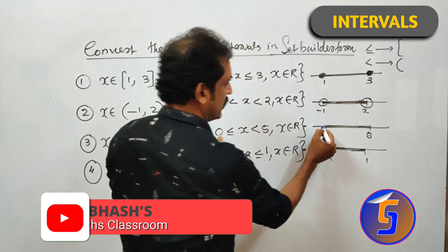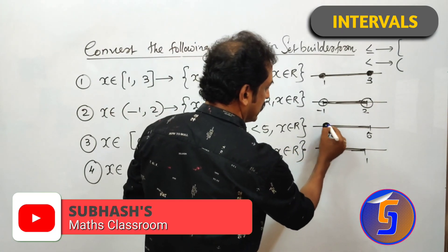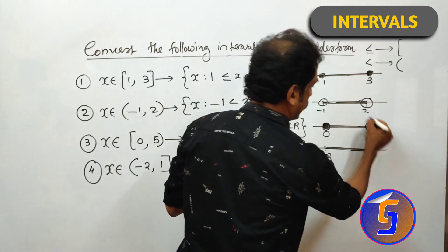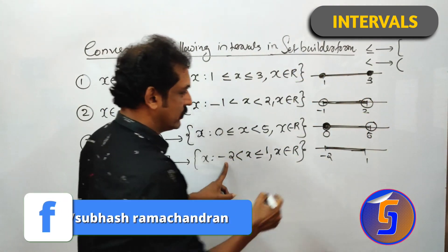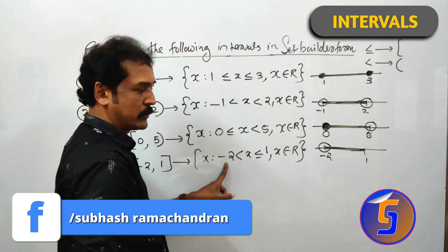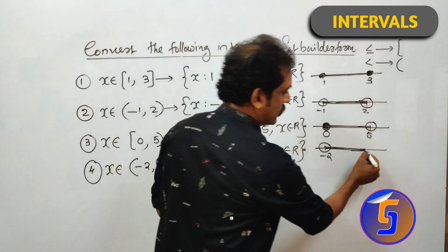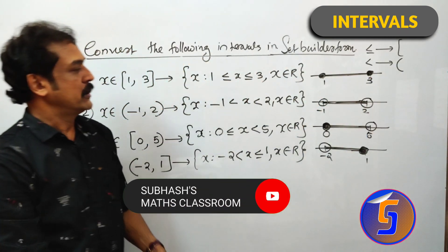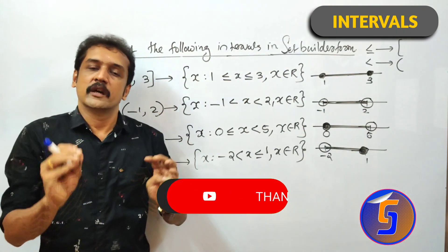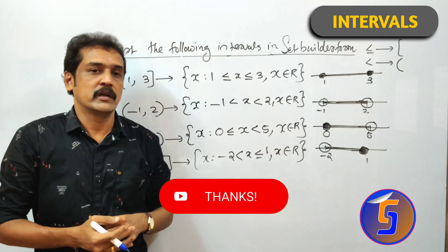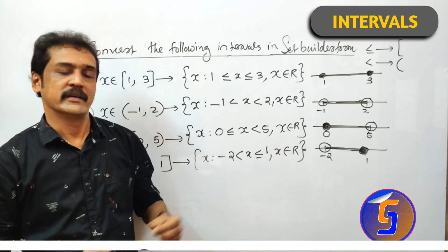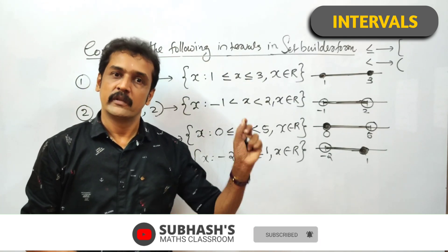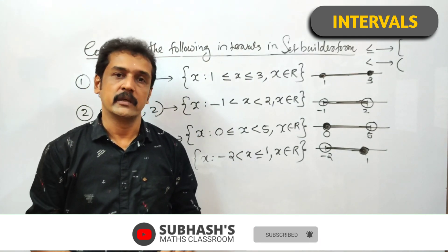If we have less than or equal to, it's bold. If we have strictly less than, it's round. That is clear. If you want to share this video, please share, subscribe, and if you want notifications for another video, please enable the bell button.